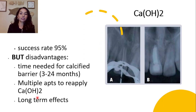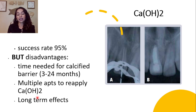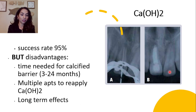There are two main materials for apexification. Calcium hydroxide has a high success rate of 95%, but there are disadvantages: it takes three to 24 months to form the calcified barrier, multiple appointments are required, and long-term use of calcium hydroxide dressing can weaken dentinal walls and increase the risk of fracture. Here you can see the pre-op image, and the post-op after calcium hydroxide apexification, showing how thin those dentinal walls are.